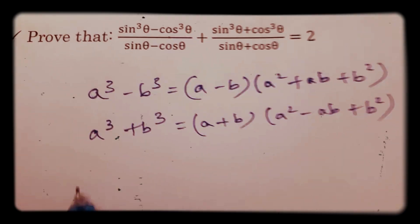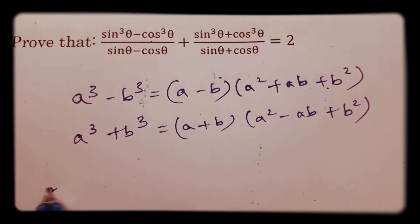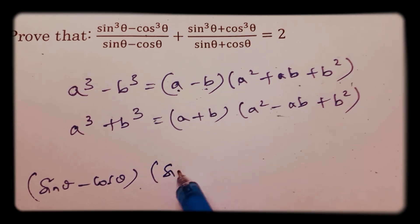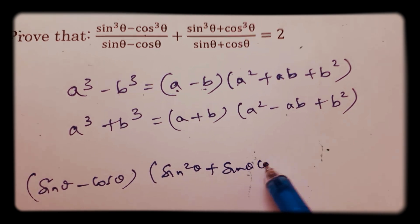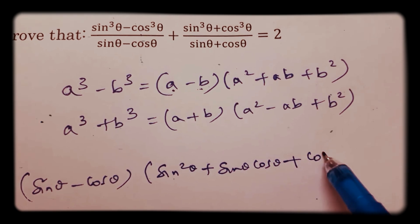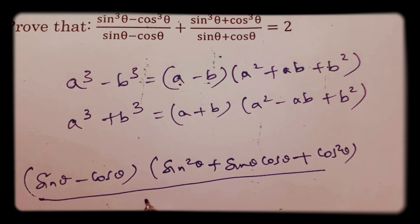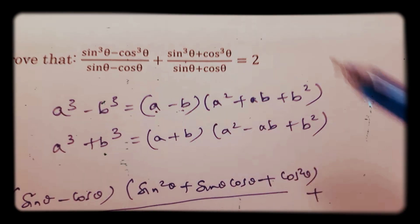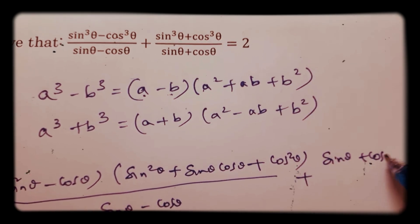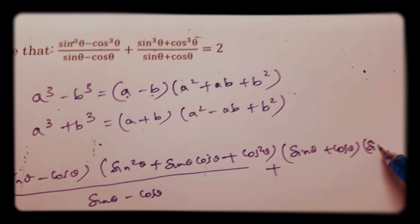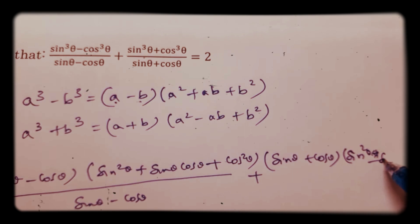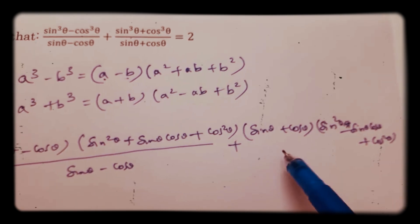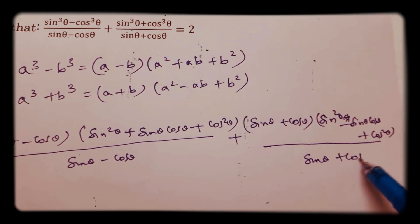Now, sin cube theta minus cos cube theta is in the form of a cube minus b cube. So it becomes: sin theta minus cos theta, into sin square theta plus sin theta cos theta plus cos square theta, divided by sin theta minus cos theta. Plus: sin theta plus cos theta, into sin square theta minus sin theta cos theta plus cos square theta, divided by sin theta plus cos theta.